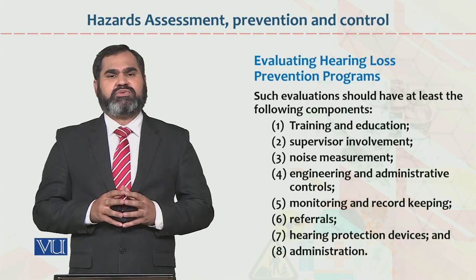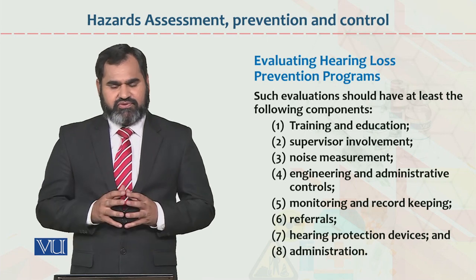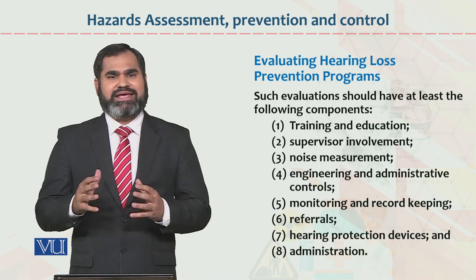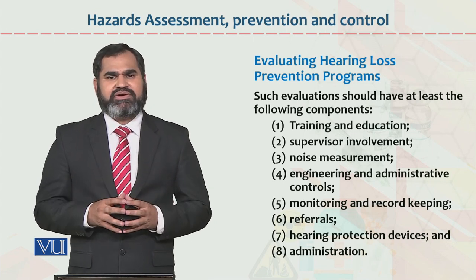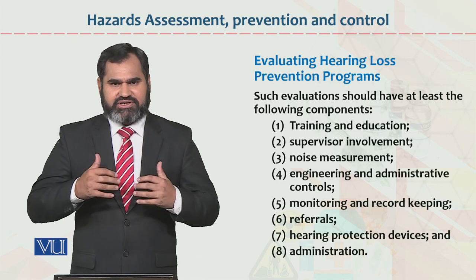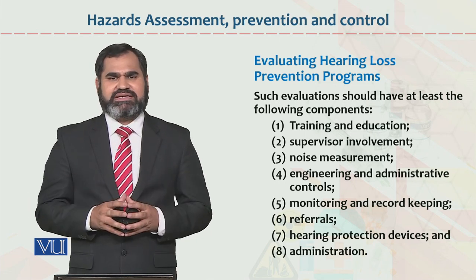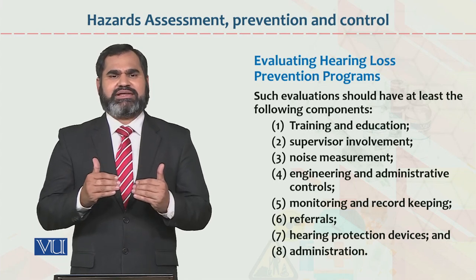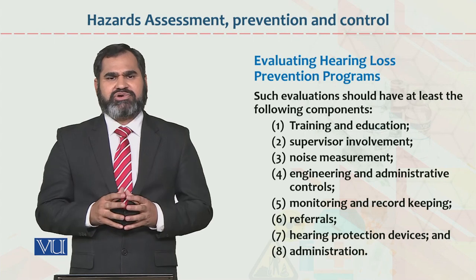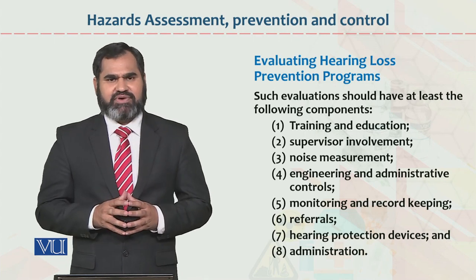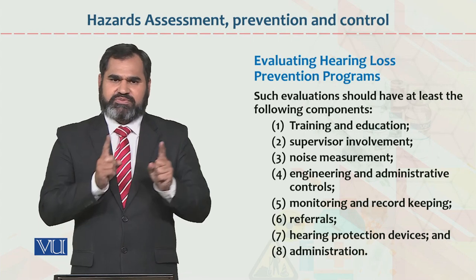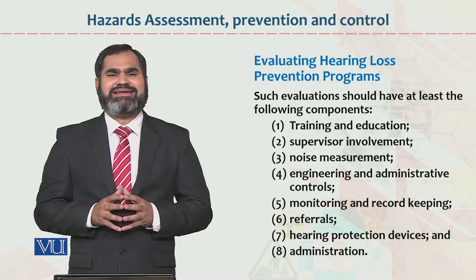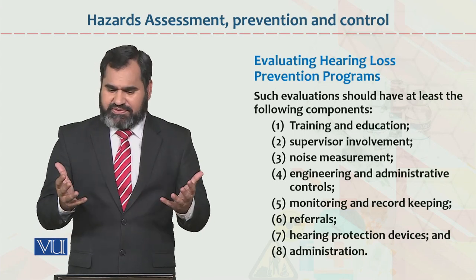Next, اس کے جو مختلف steps ہیں وہ یہ ہیں: Training and education, اور Supervisor involvement۔ Training مطلب transformation of knowledge from one person to another person, so he or she can perform his or her duties in a better way۔ Employees کو educate بھی کرنا ہے — یہ دونوں کام top management کی responsibility ہے۔ Supervisor involvement: جب تک employee اور supervisor ایک page پر نہیں ہوں گے، organizational goals اچیو نہیں ہوں گے اور noise related problems solve نہیں ہوں گی۔